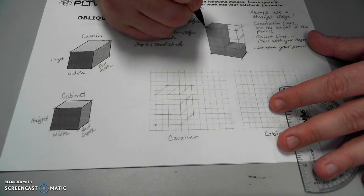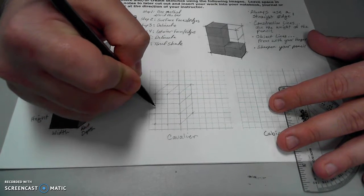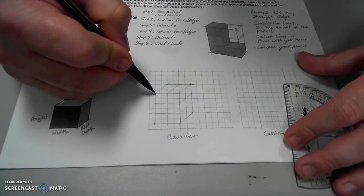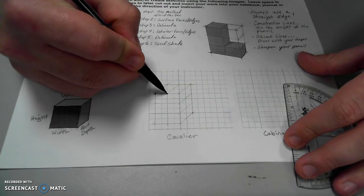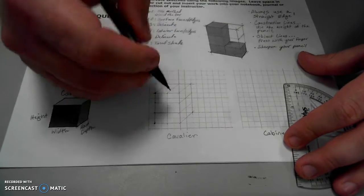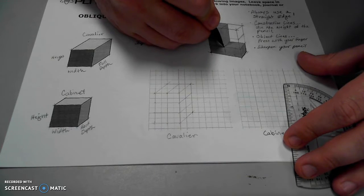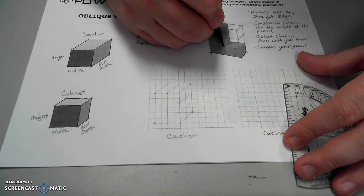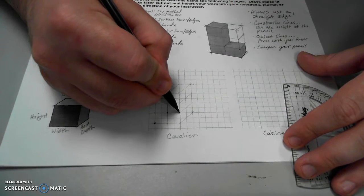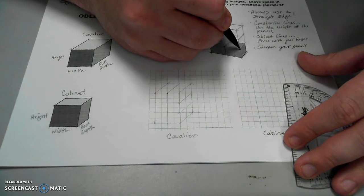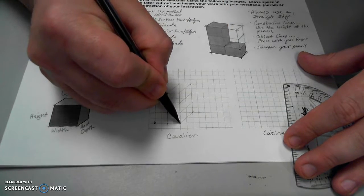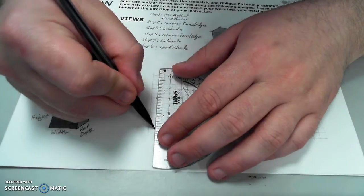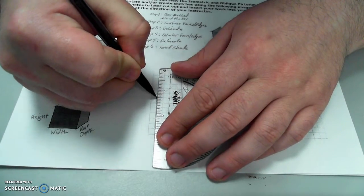I'll go up three. One, two, three. I'll come over one, back down two, and over one again. Down one, down one, and over two. That becomes my front face.